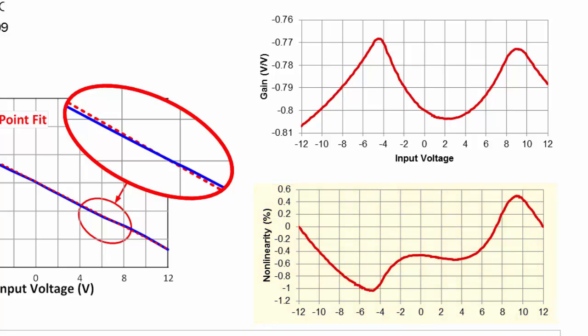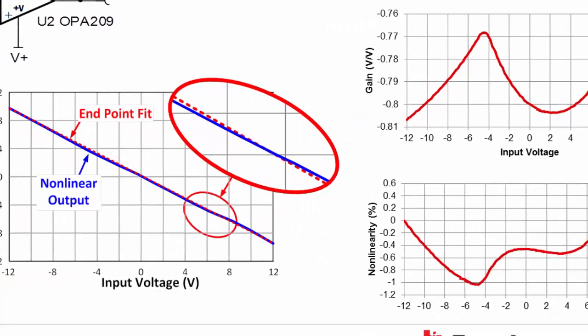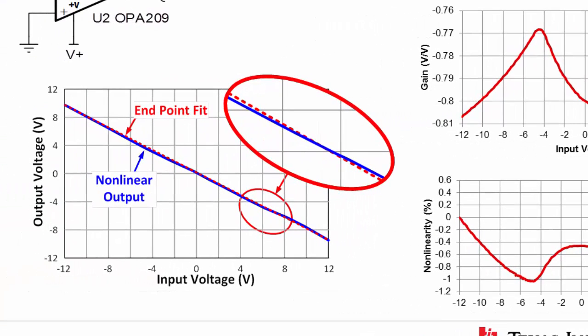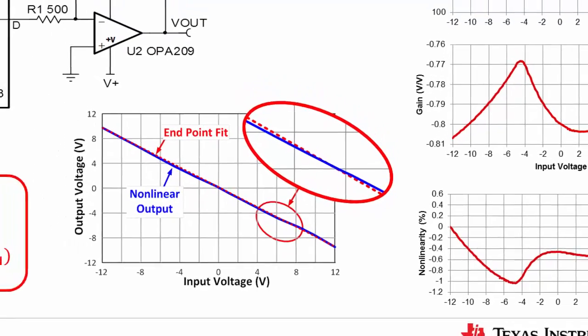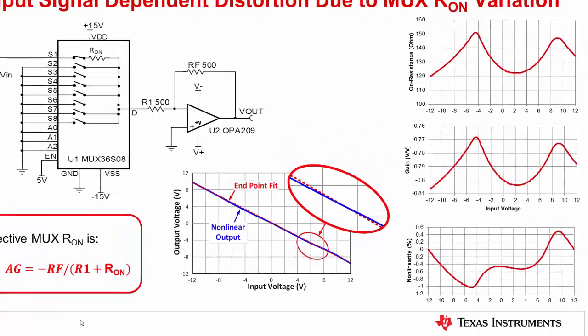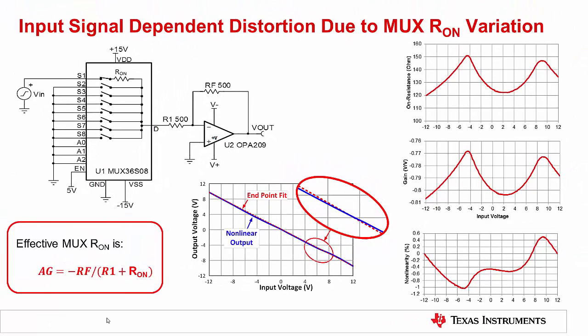In this example, the worst case non-linearity is about 1%. Note that the non-linearity errors are calculated by doing an endpoint fit to the transfer function and comparing the measured transfer function to the endpoint fit. This example intentionally uses small gain-setting resistors to make the non-linearity and gain error more prominent. However, in a circuit where current flows through the multiplexer, the on resistance will introduce gain and non-linearity errors.